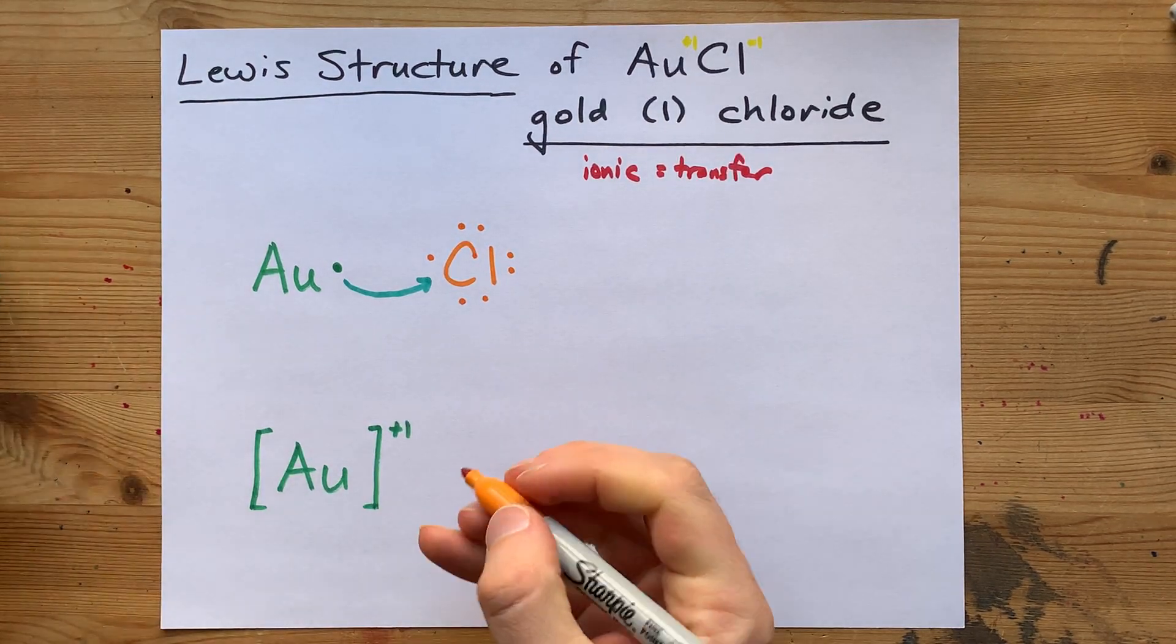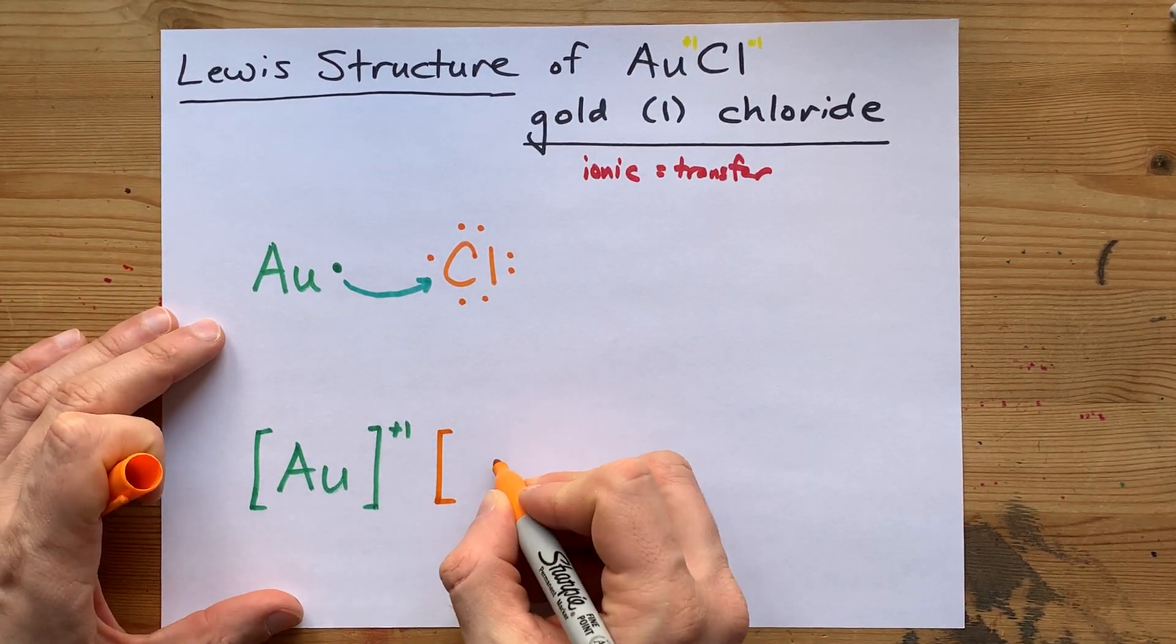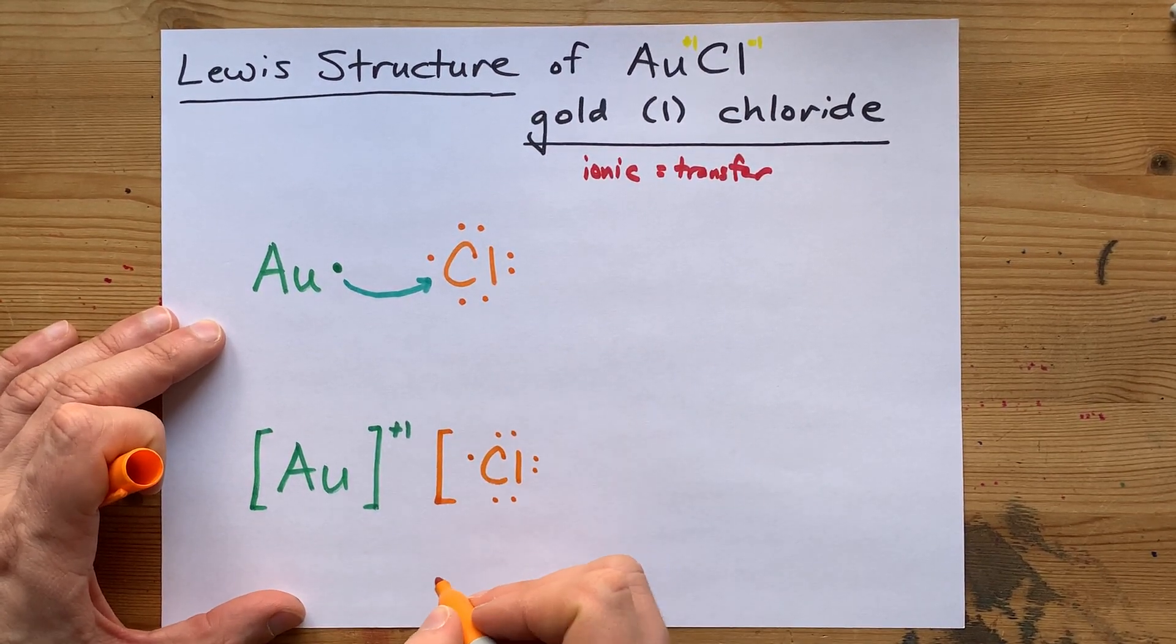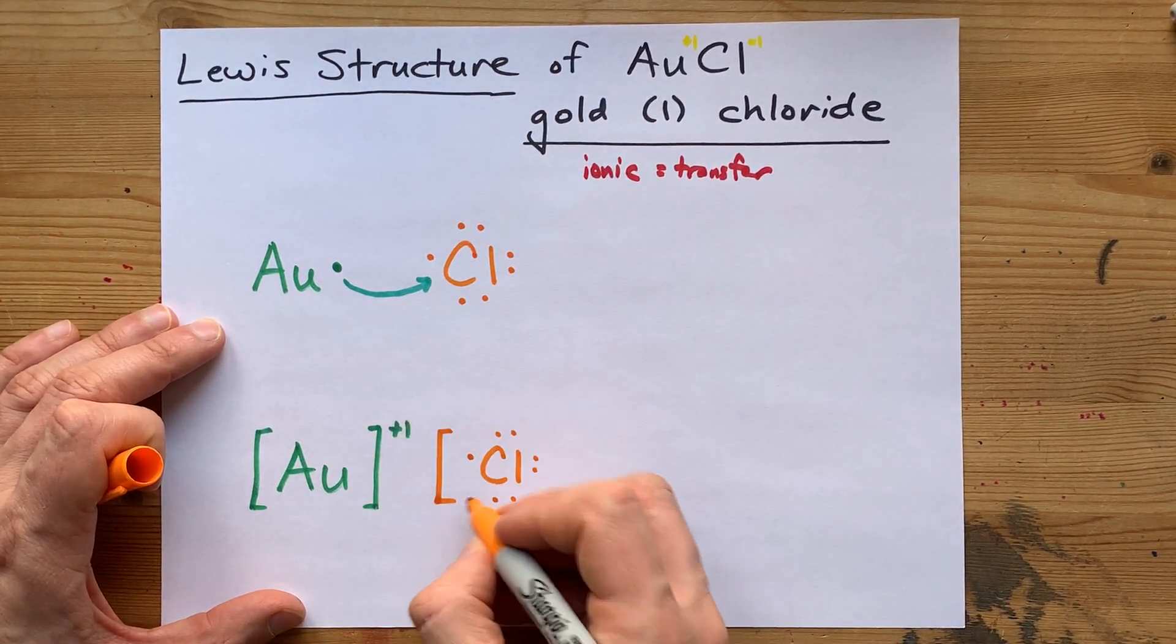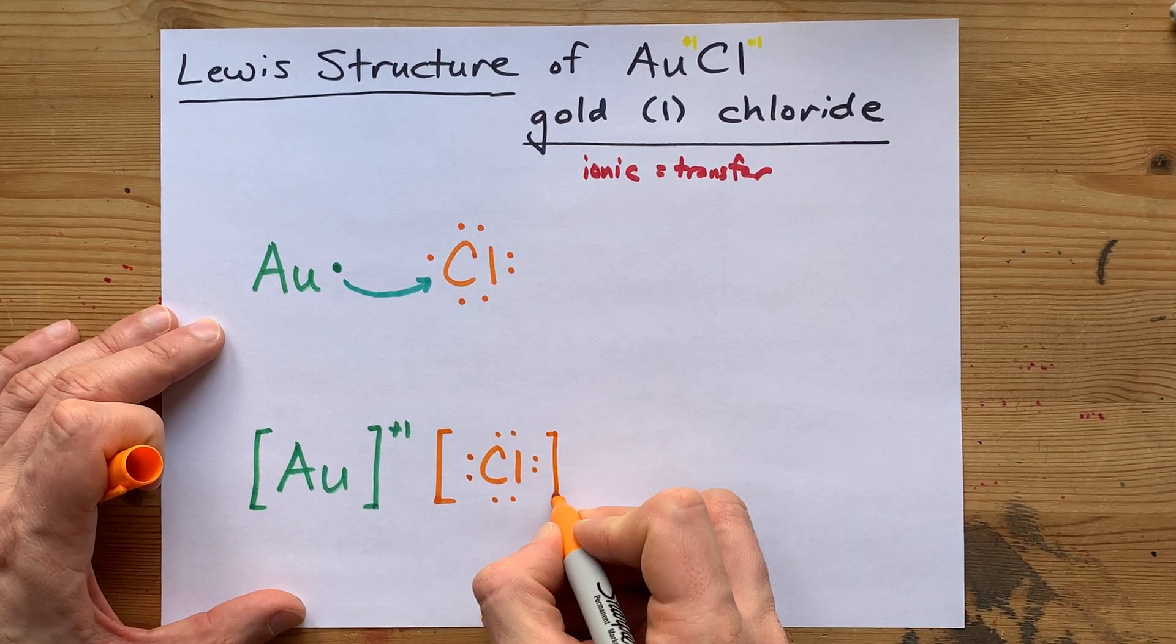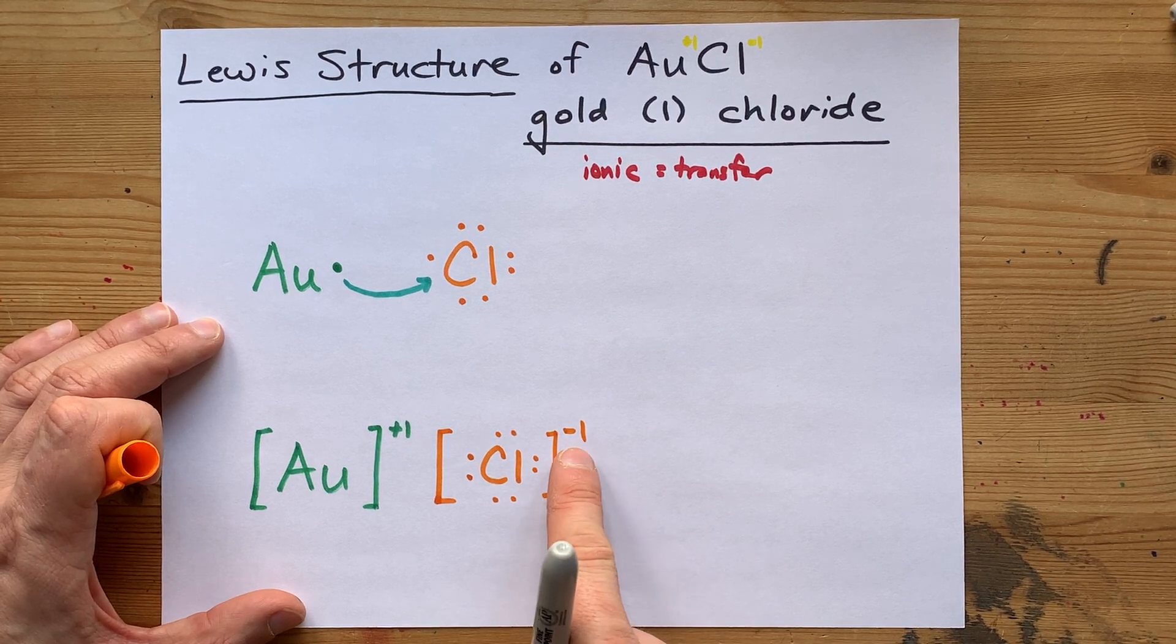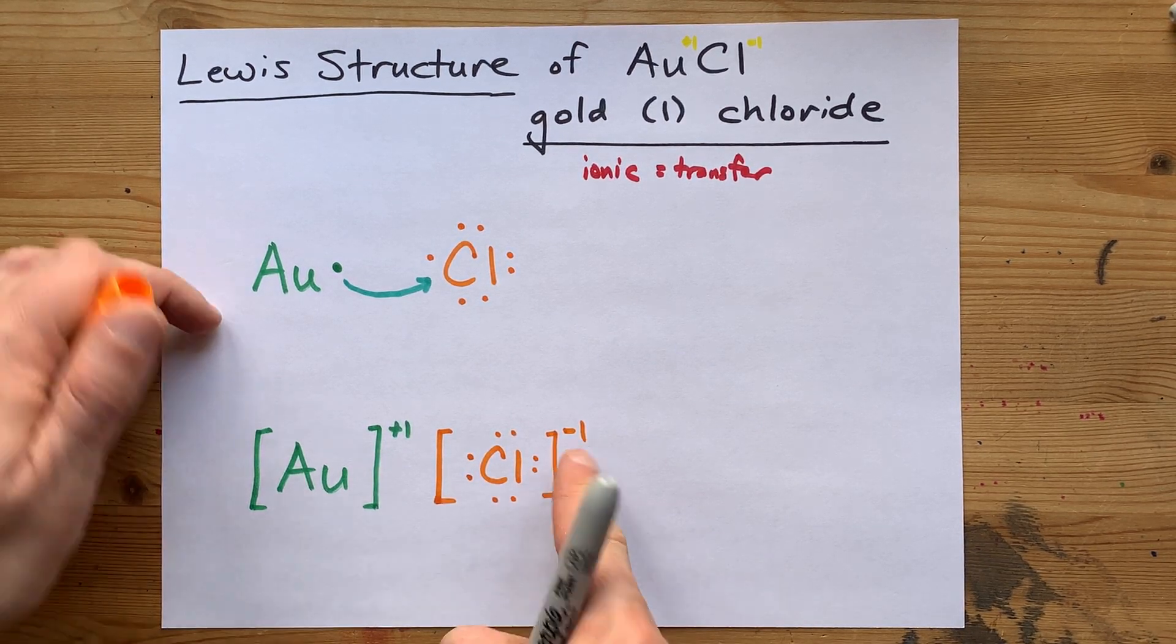And the chlorine, on the other hand, brought seven electrons with it. 1, 2, 3, 4, 5, 6, 7. And gained one extra. That gives it the complete octet. That makes it stable, and that gives it a charge of minus one for the extra one electron.